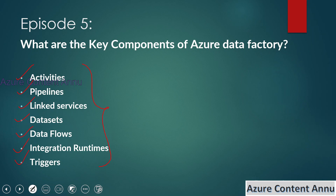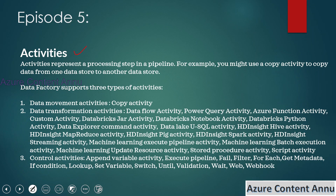Moving on to the first component — activities. By definition, activities represent a processing step in a pipeline. You can think of an activity as a single step or a single unit of task in a pipeline. If we combine multiple activities together, it will create a meaningful pipeline. Basically, an activity is a building block of the pipeline, and by combining activities in a meaningful way, we can perform certain tasks in ADF.